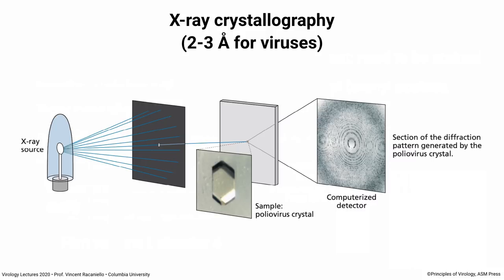Nowadays you can buy crystallization kits — trays with different chemicals in each one — put your virus in and see what conditions give you a crystal. Once you get crystals, you bombard them with X-rays and hope the crystal diffracts. Sometimes they don't or they fall apart, but in some cases they will diffract. In the old days, you used film to capture the diffraction pattern — like the famous X-ray film that Rosalind Franklin took that Watson and Crick used. Nowadays we use detectors directly. The diffraction pattern tells you where all the atoms are located — the X-rays are bouncing off the atoms in the crystal, and you can tell where each atom is based on their position.